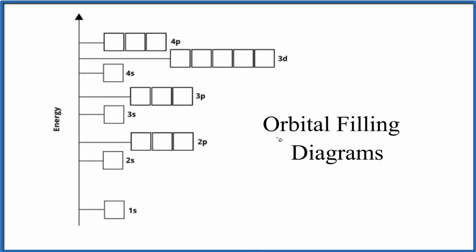Our goal here is to figure out how to write orbital filling diagrams, which are really just another representation like electron configurations. We want to see where those electrons are around the nucleus of an atom. To learn and remember this you really need to practice, so I'll do an example of an orbital diagram and then we can work through several together.